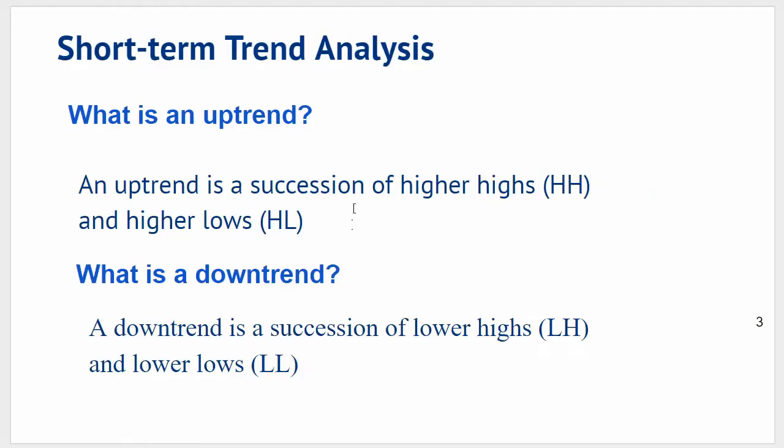Looking at a definition — this is what we call short term trend analysis, that's what we call the first term time frame. So what is an uptrend? An uptrend is a succession of higher highs and higher lows. A downtrend is the opposite: a succession of lower highs and lower lows.